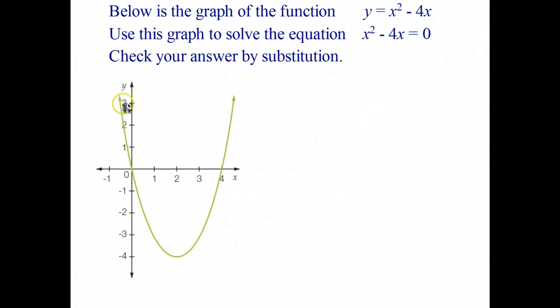If you happen to have the graph of the equation, sometimes this is the easiest way to solve the equations. So here's our quadratic relationship or quadratic function y equals x squared minus 4x. There's its graph and we're trying to find out the solution to the quadratic equation x squared minus 4x equals 0.